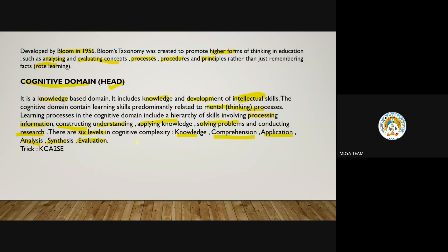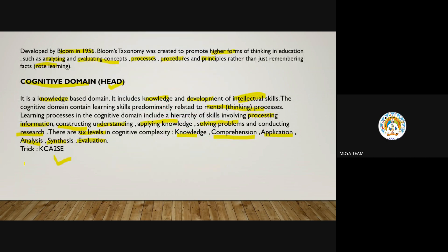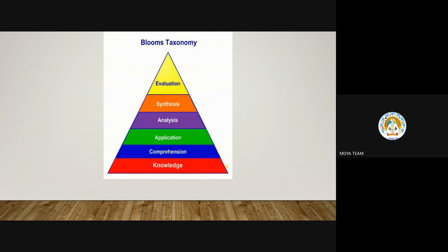There is a mnemonic trick: K, C, A2, S, E — where A appears twice (application and analysis). So for cognitive domain: K for knowledge, C for comprehension, A2 for application and analysis, S for synthesis, E for evaluation. Knowledge is at the lowest level and evaluation is at the highest level.